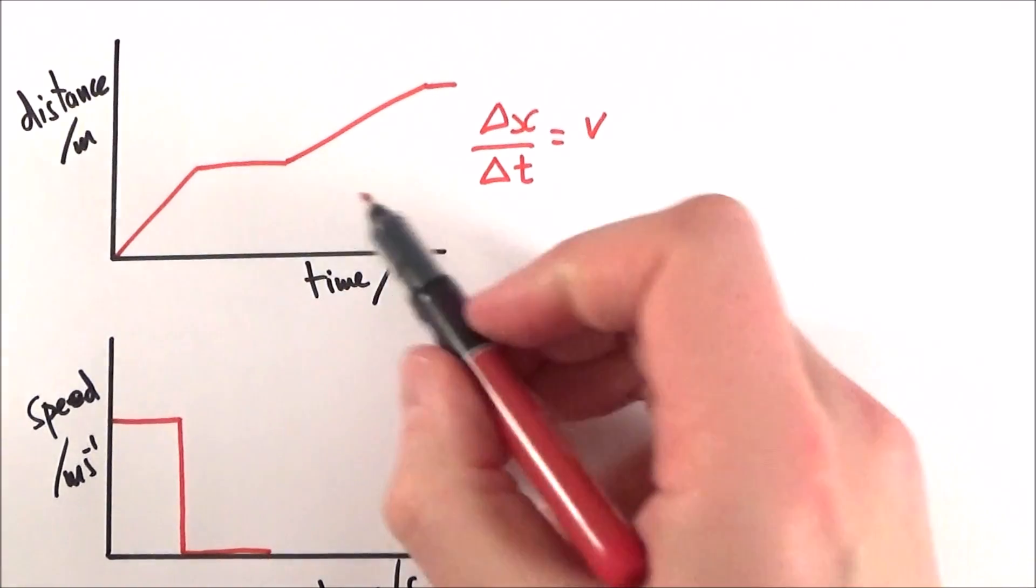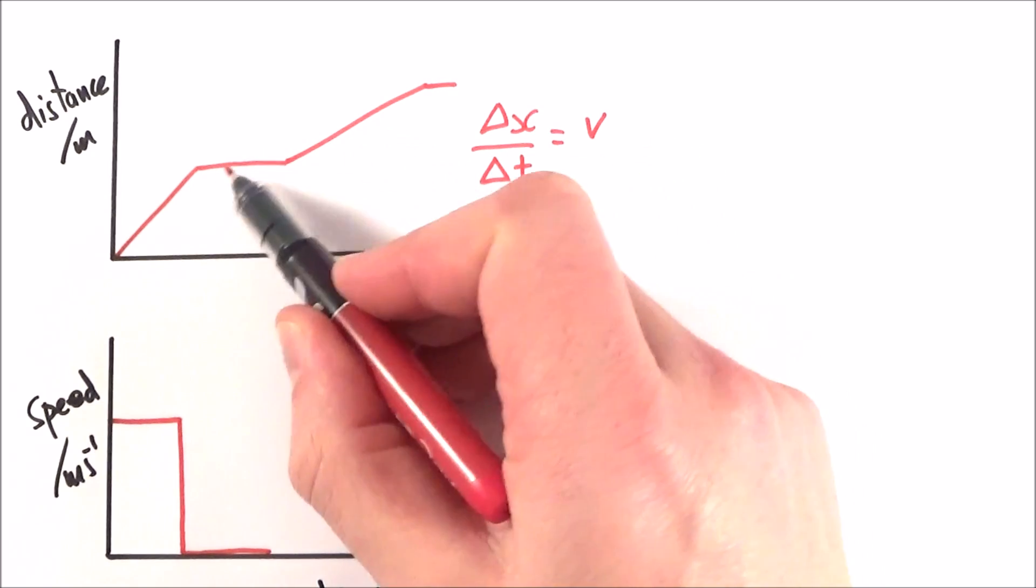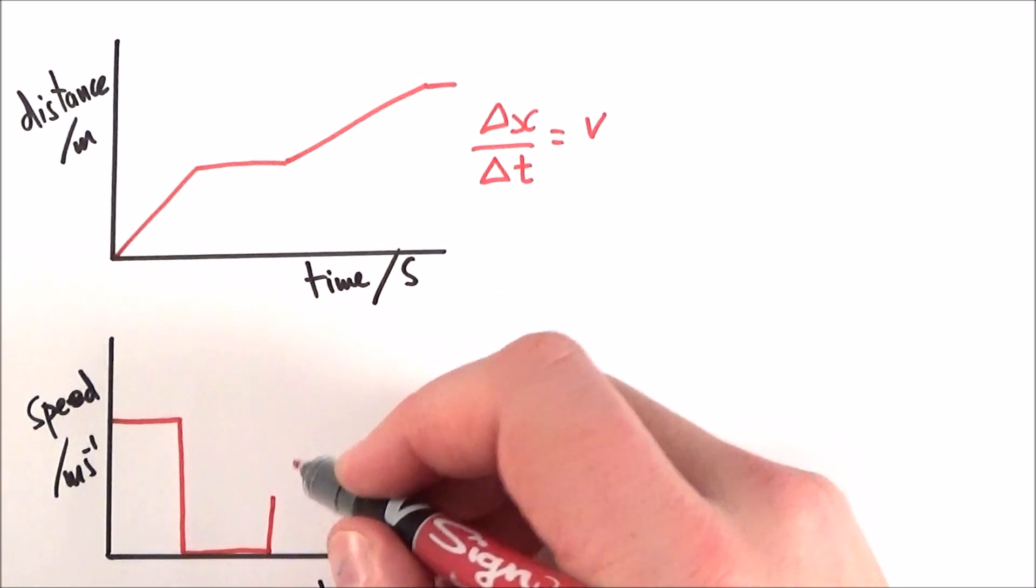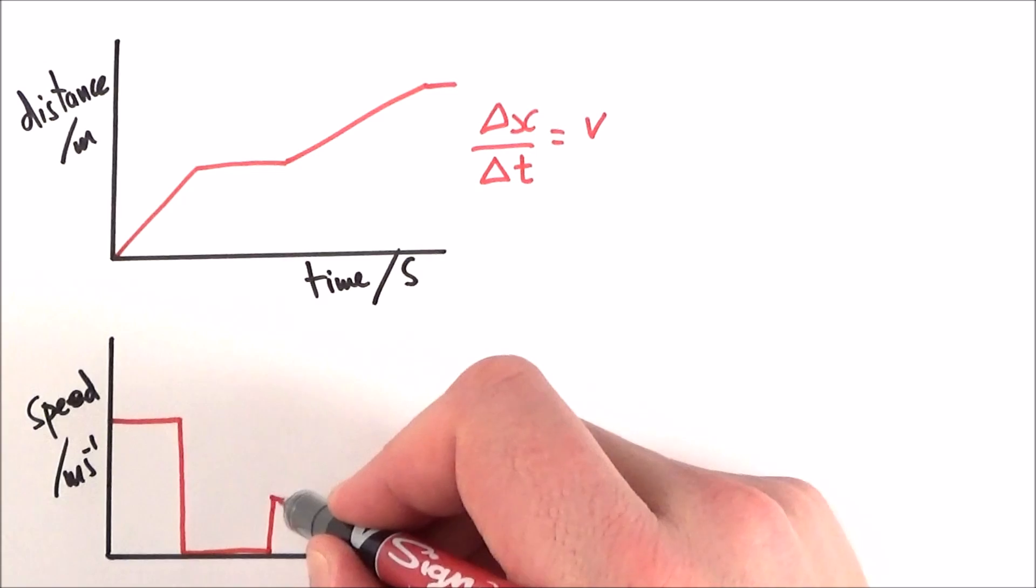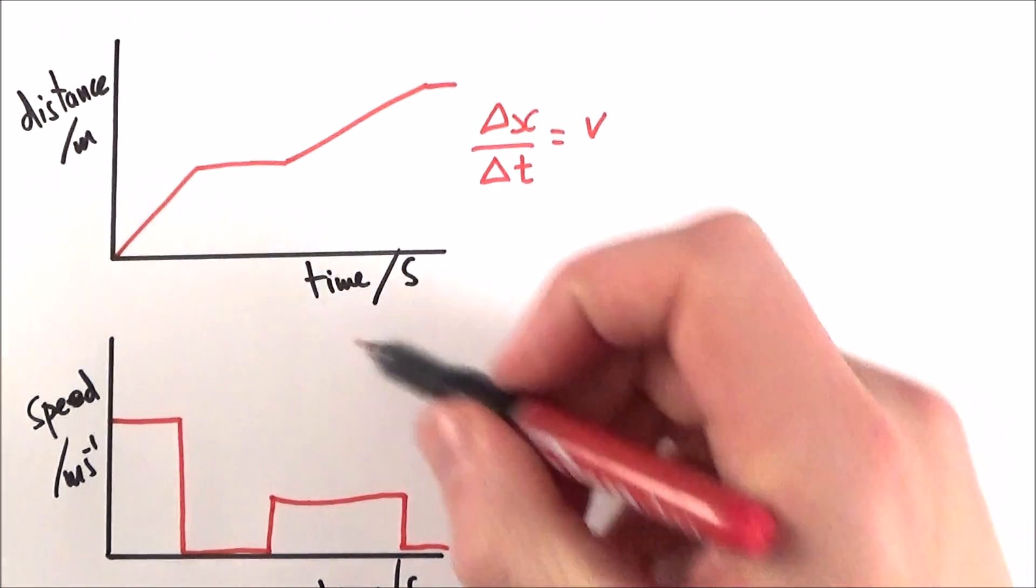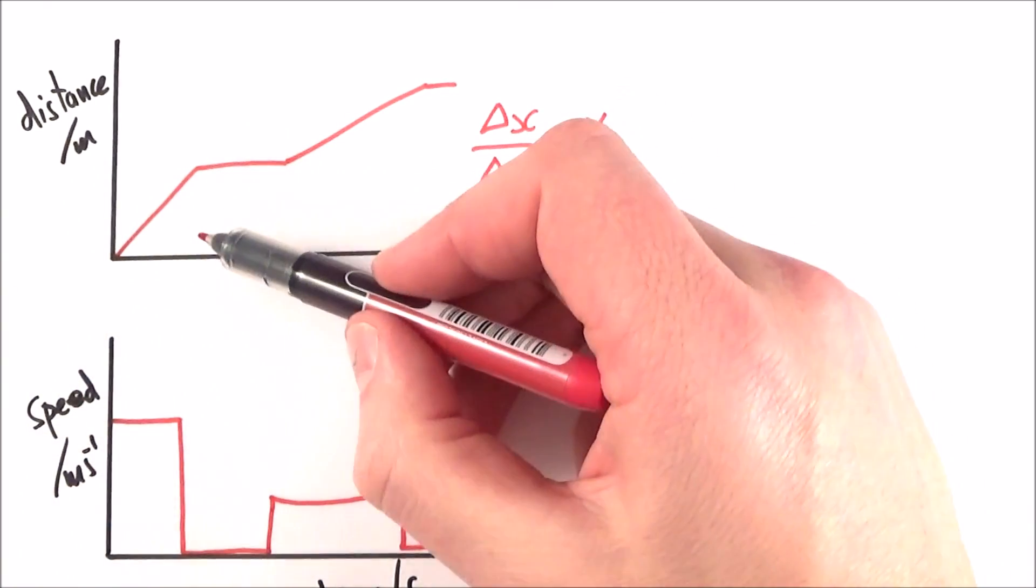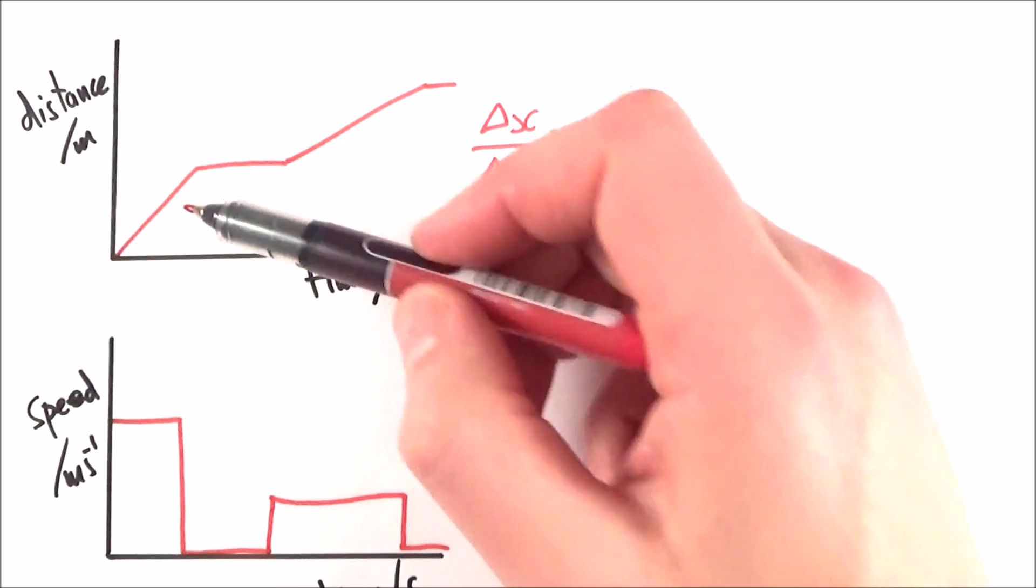We then have another speed at this point here, but this gradient is less than that, so maybe they might move at a smaller speed for a certain amount of time before they're stationary once again. And we can really see that this speed-time graph is a graph of the gradient of the one up here.